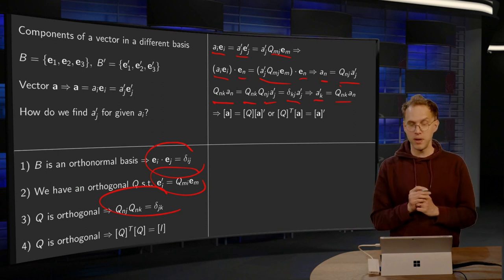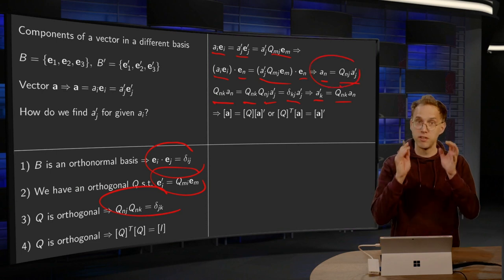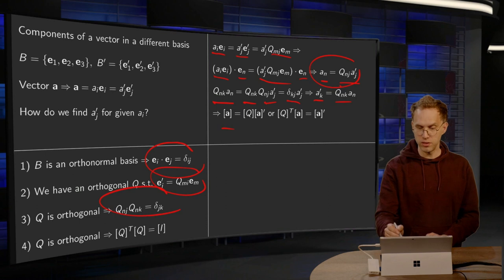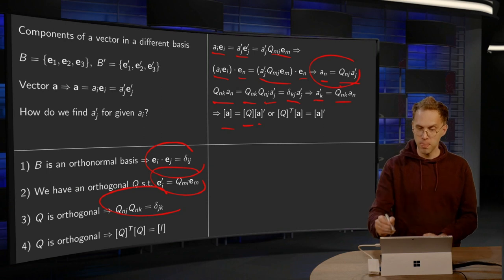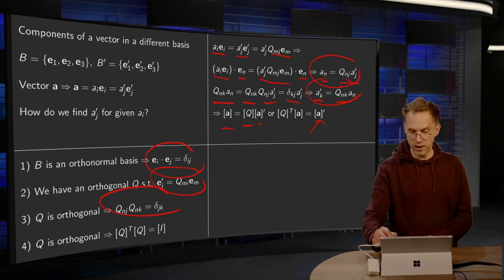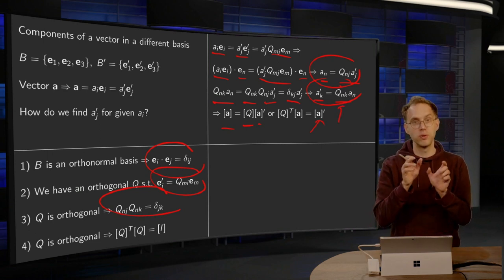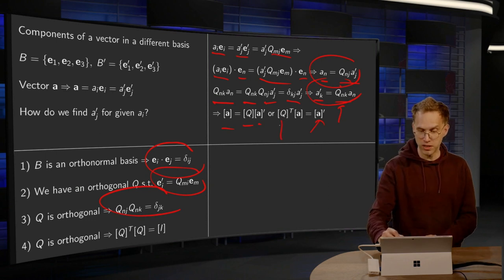So, this is mean in matrix form. Well, this first equation just says vector A equals, straightforward, matrix of Q times the vector of A in the new basis, and the second expression, we have the AK' here, the N and the K are here the wrong way around to do the matrix multiplication, so you have to take the transpose, you have the matrix of Q transpose times vector A.